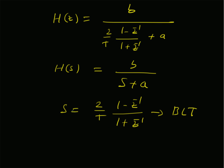This bilinear transformation s = (2/T)·(1 − z⁻¹)/(1 + z⁻¹) can be used to replace s with a function of z to derive the digital transfer function from a given analog filter. Although we derived it for a single-pole analog filter, this transformation is applicable for a general nth-order differential equation. Thanks for watching.